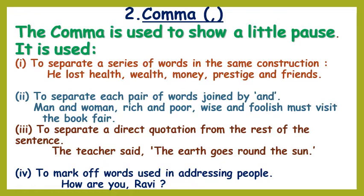Let's read this sentence once again with a little pause: He lost health, wealth, money, prestige and friends. I have a ball, bat, badminton and football. I need a pen, pencil, eraser, sharpener and a copy.